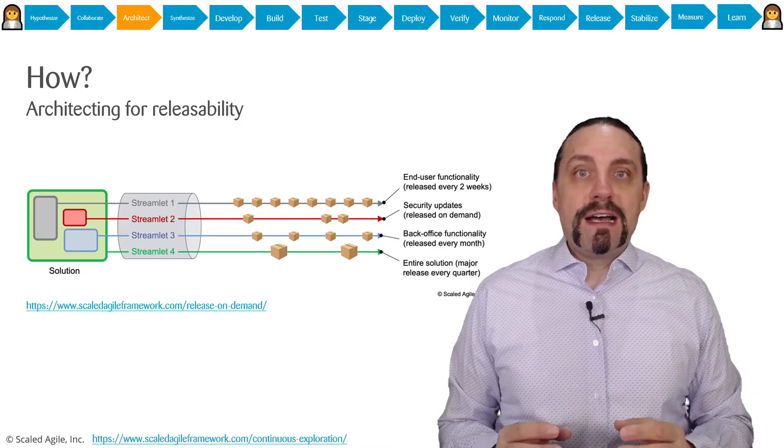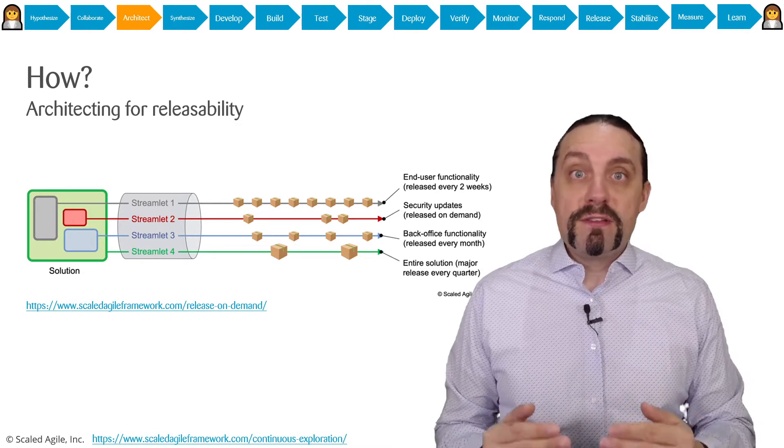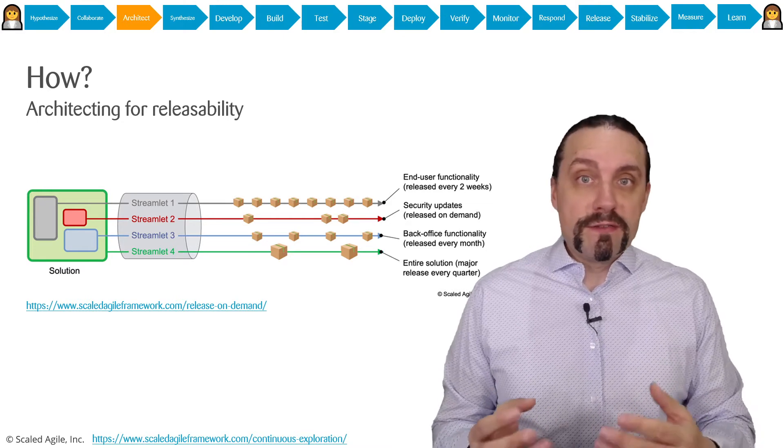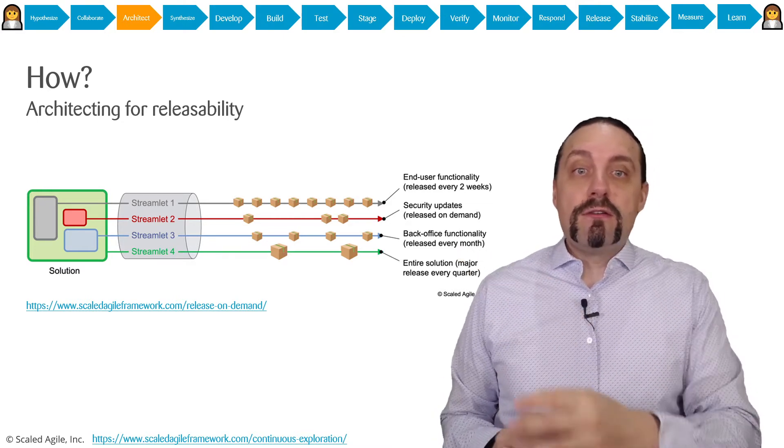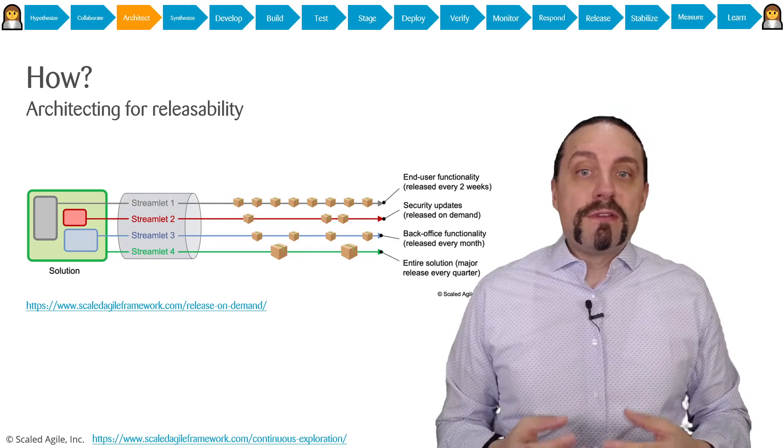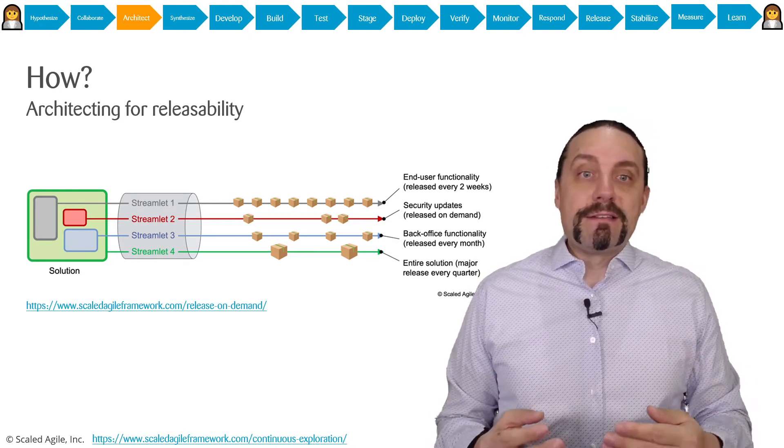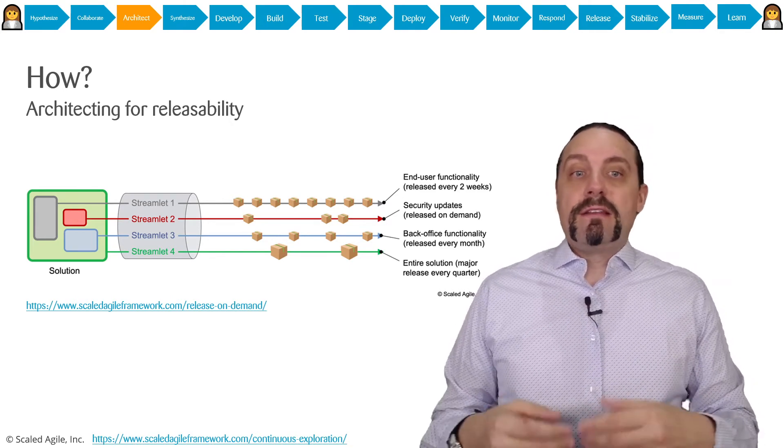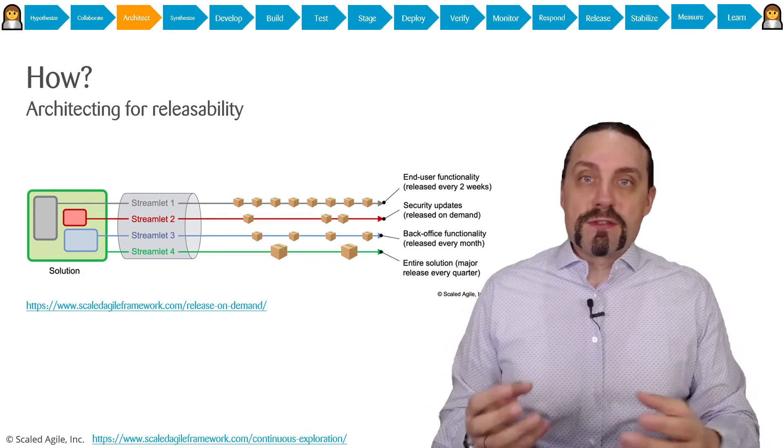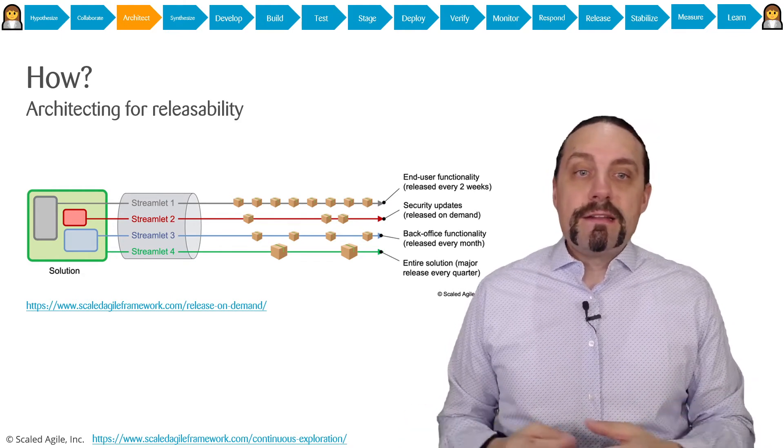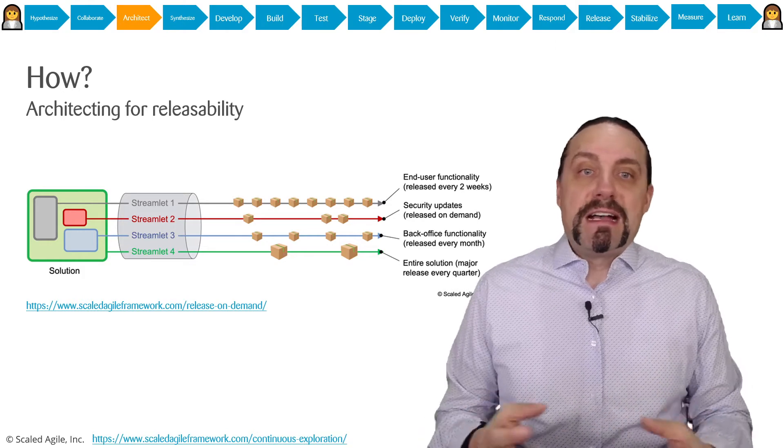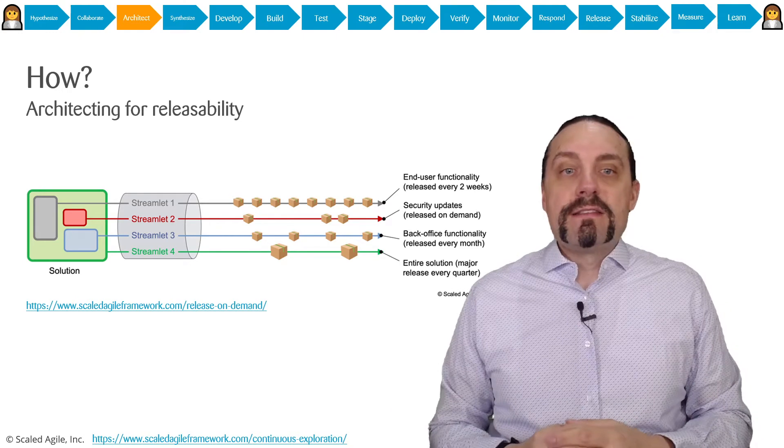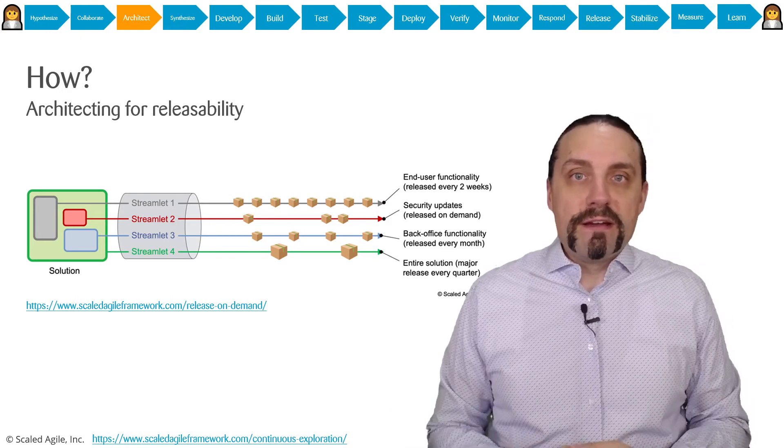This enables different deployment and release cycles for each component. For example, the gray one has a release every two weeks, the red one has releases on demand for security issues, and the blue one has roughly a release every month. The whole system is released for example every quarter. This is how you architect for releasability.